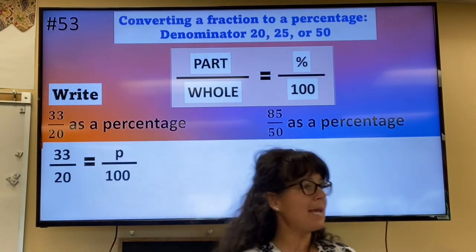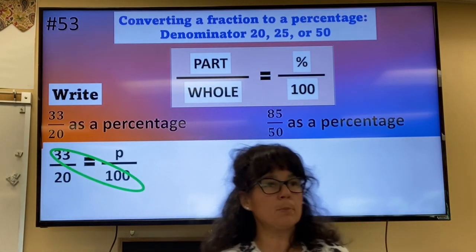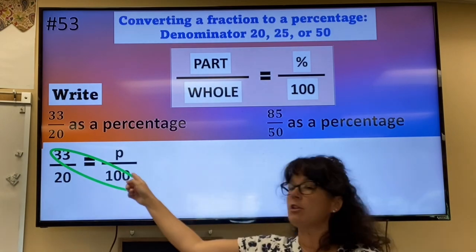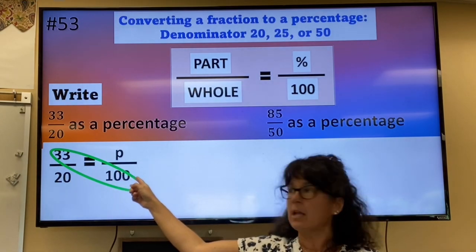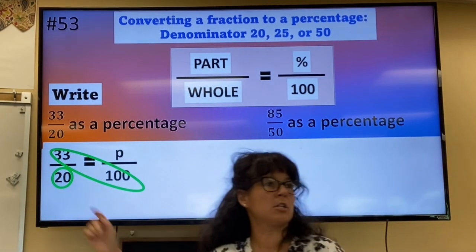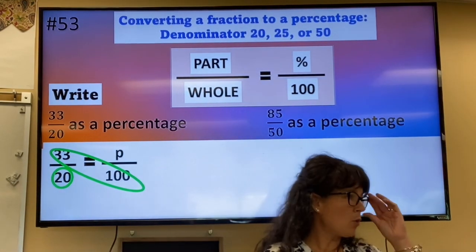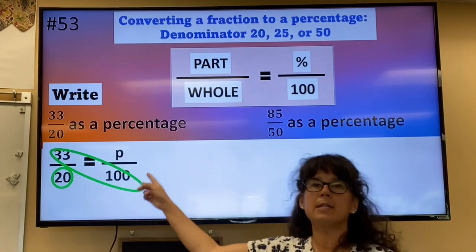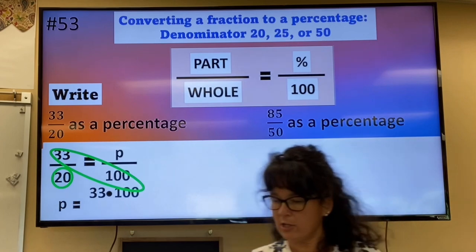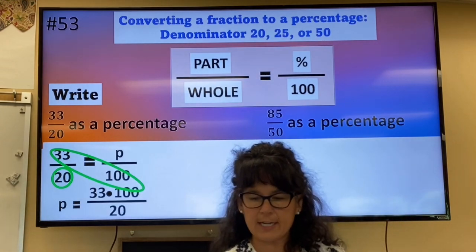Those words mean that you want to multiply the numbers that are diagonal to each other. So 33 times 100. And then divide by the number that is diagonal to the unknown. So if you grabbed your calculator and did 33 times 100, and then you took that answer and divided it by 20,